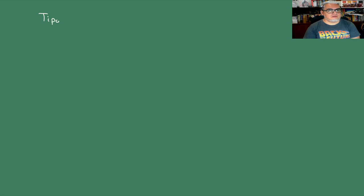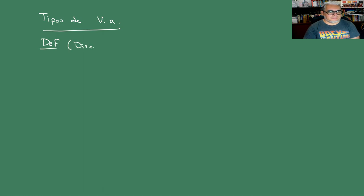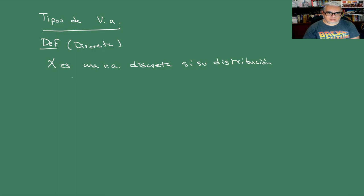Vamos a dar un par de definiciones que van a caracterizar a nuestras variables aleatorias: son tipos de variable aleatoria. Podemos tener variable aleatoria discreta. X es una variable aleatoria discreta si su distribución es constante por pedazos.